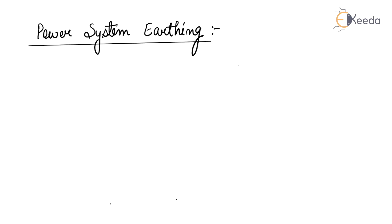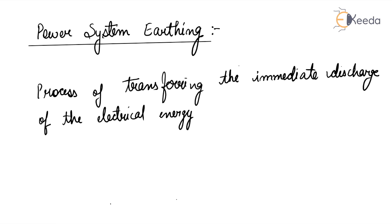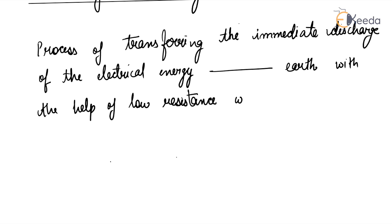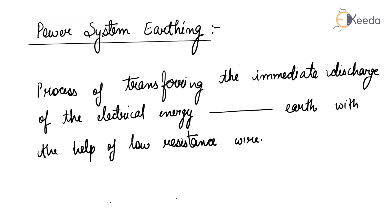Electrical earthing is a process of transferring the immediate discharge of electrical energy directly to the earth with the help of a low resistance wire. This process is known as electrical earthing.